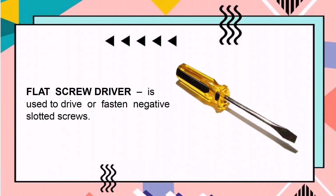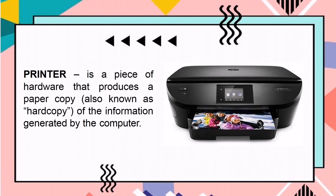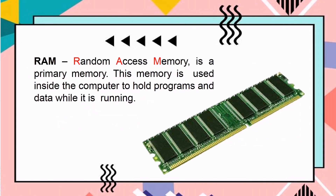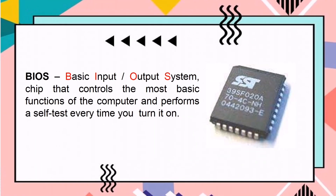Flat screwdriver is used to drive or fasten negative-slotted screws. USB, or universal serial bus, is a hardware interface for low-speed peripherals such as the keyboard, mouse, joystick, scanner, printer, and telephony devices. Printer is a piece of hardware that produces a paper copy — also known as a hard copy — of the information generated by the computer. RAM, or random access memory, is a primary memory used inside the computer to hold programs and data while it is running. BIOS, or basic input-output system, is a chip that controls the most basic functions of the computer and performs a self-test every time you turn it on.